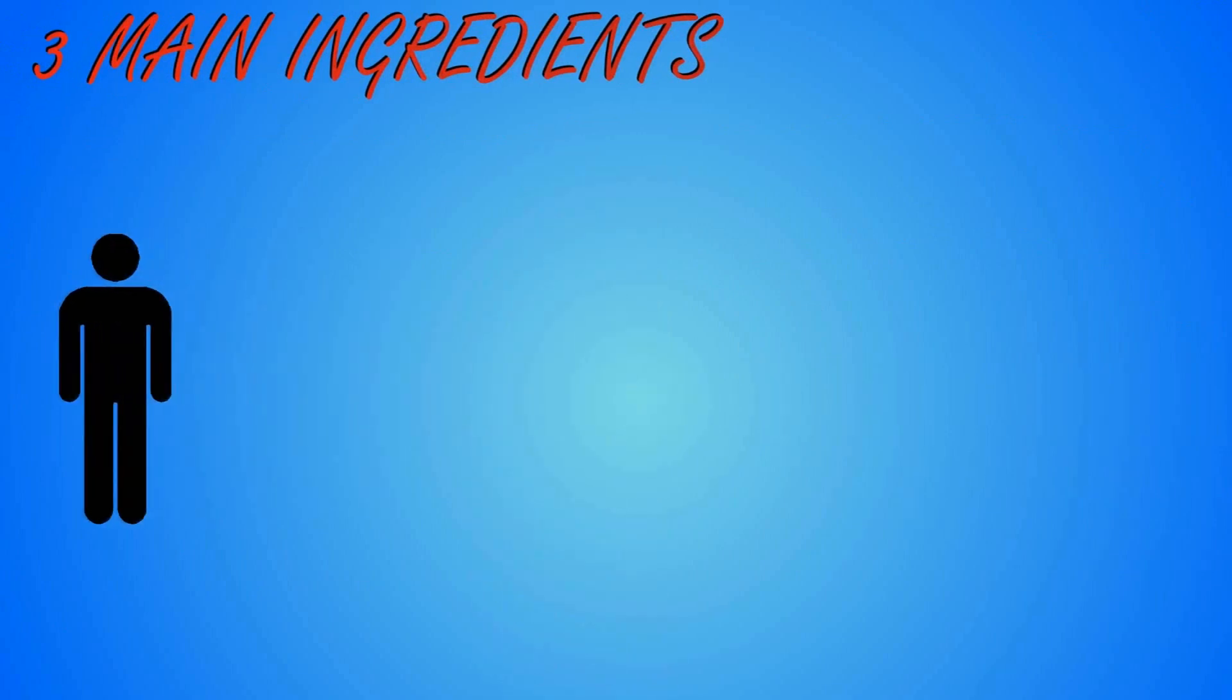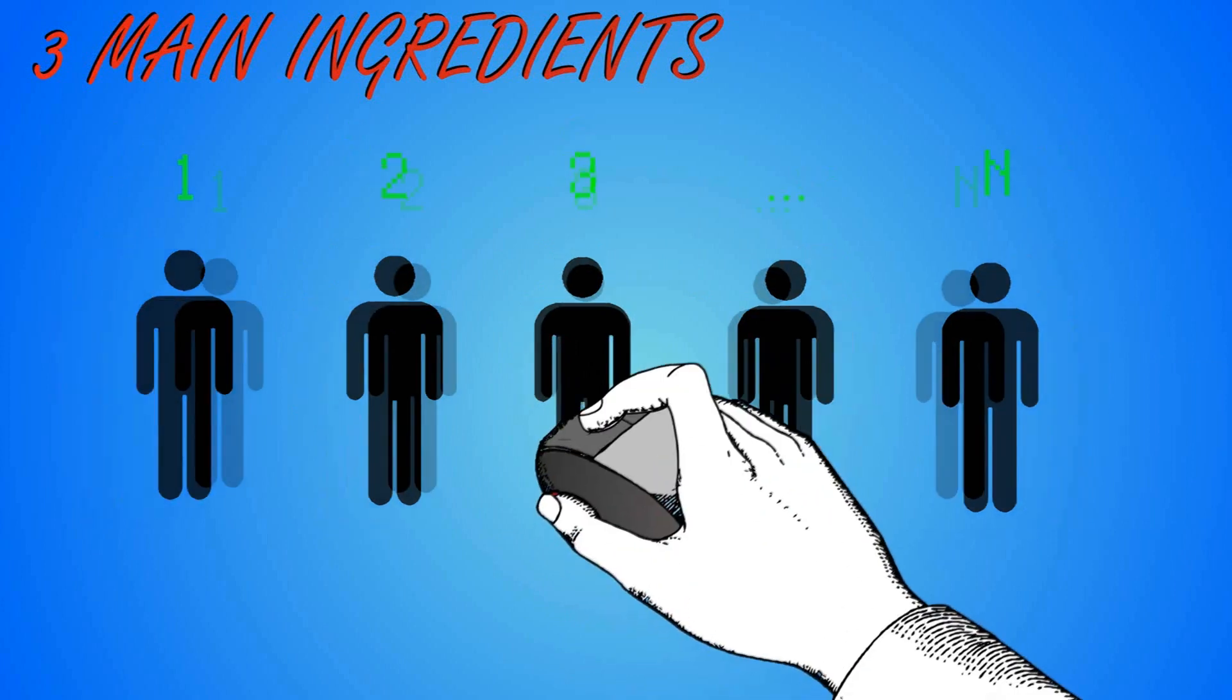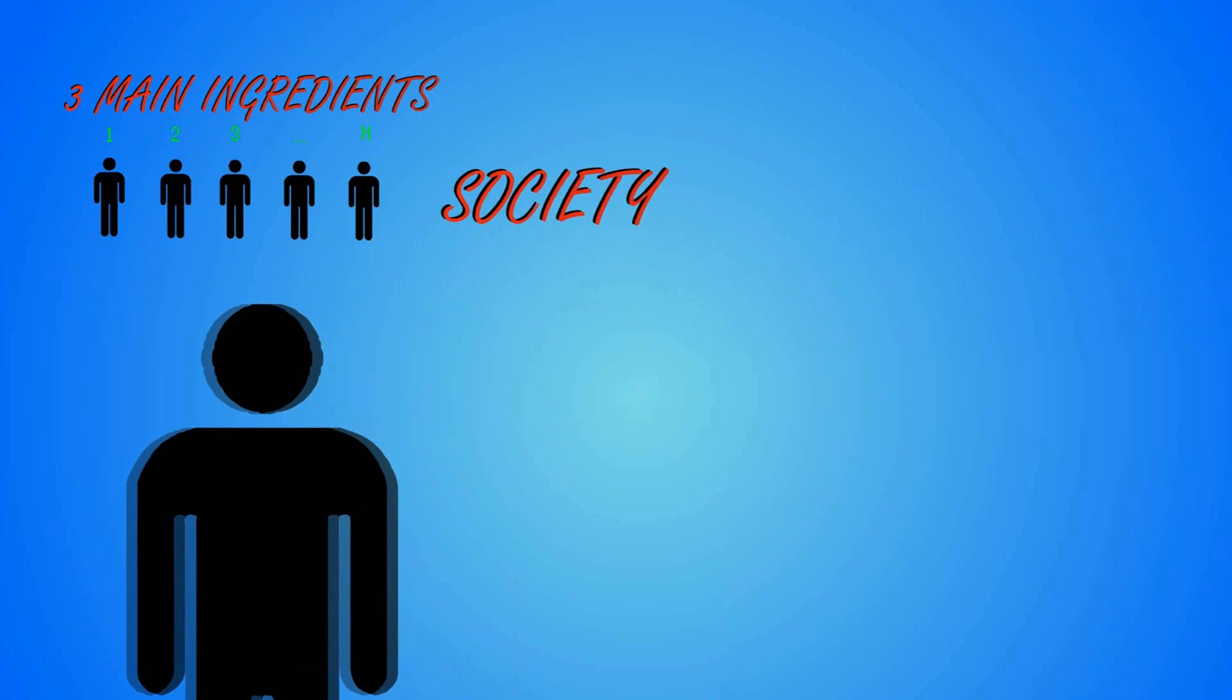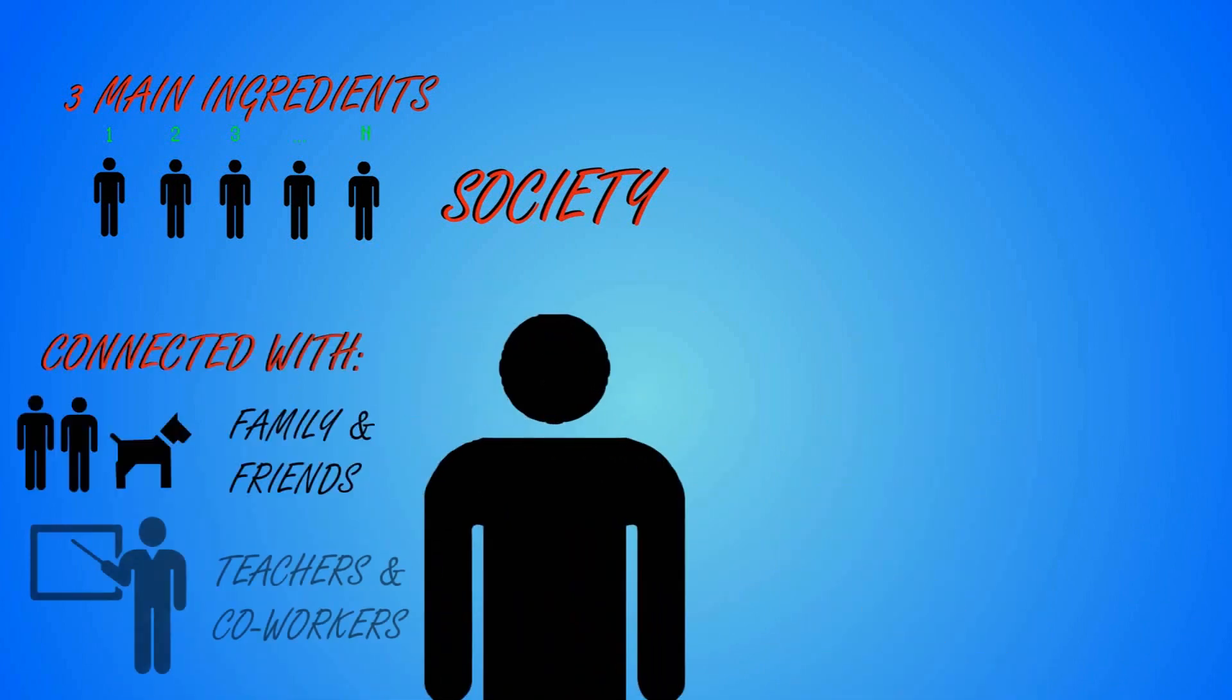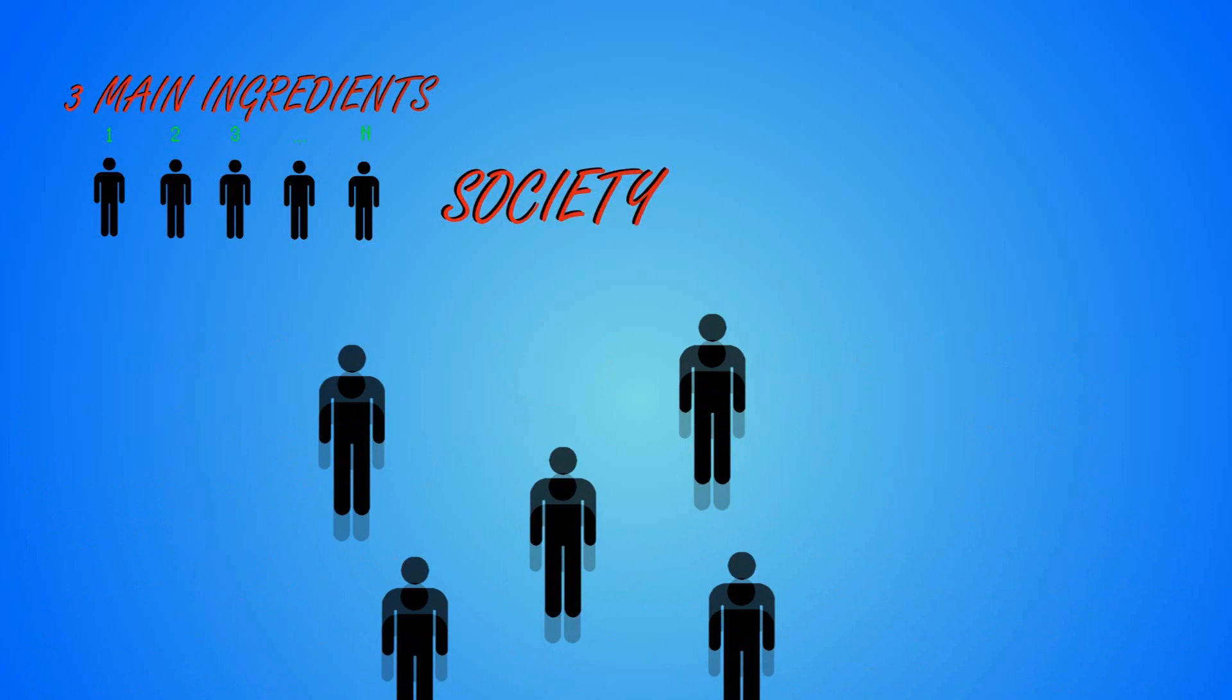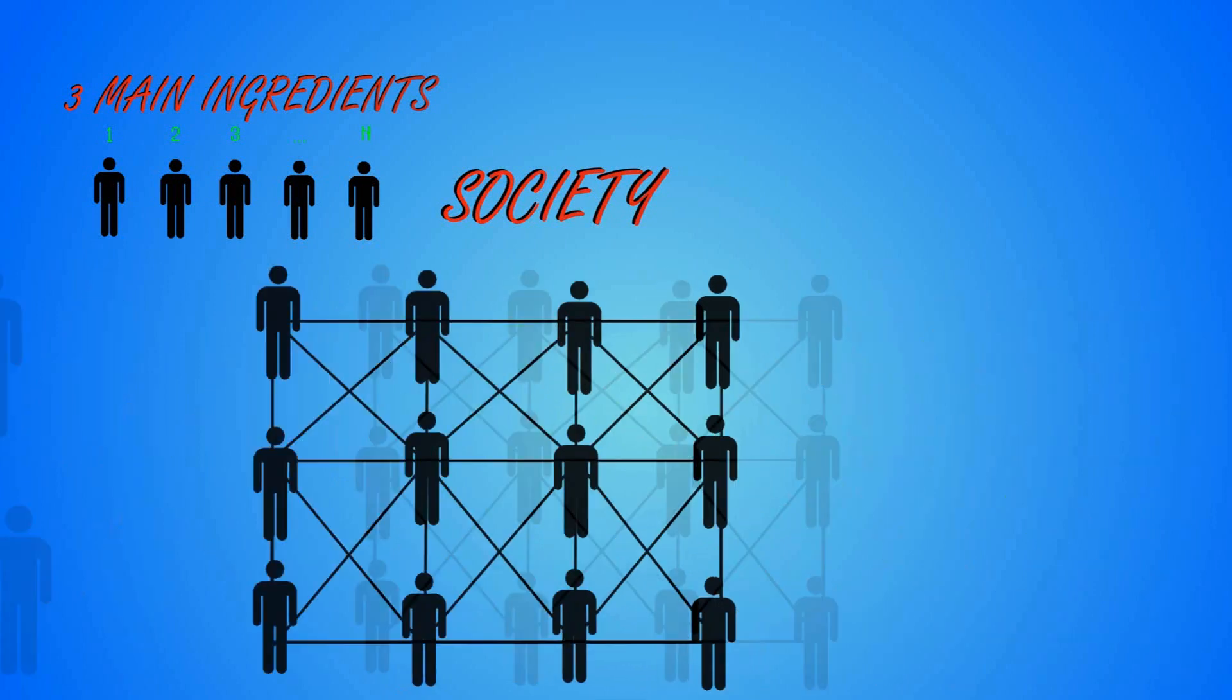For that, we are going to need three main ingredients. First, let's consider a group of N people, and let's label them with the numbers from 1 up to N. This group of individuals will be the society for our model. As happens in real life, not every individual is connected with each other, in the sense that not all individuals share information with one another. For example, you might be connected to your family and your friends, but surely not to some random person that lives in another country which you haven't talked in your life. We are going to call the group of people that a certain individual can interact with its neighbors.